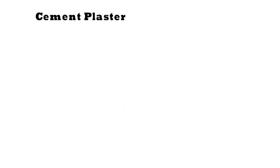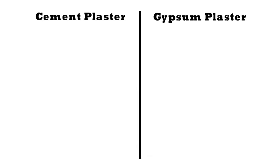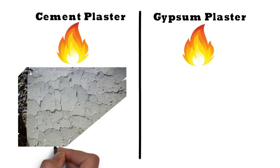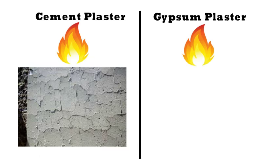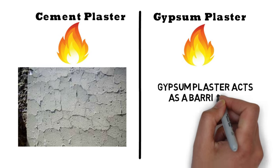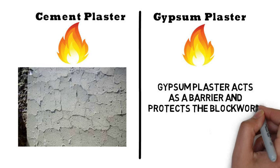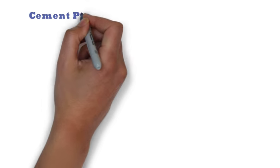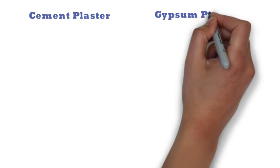In the event of fire, cement plaster becomes brittle and cracks and loses the bond with the wall. But in case of fire, gypsum plaster acts as a barrier and protects the blockwork, concrete and steel.